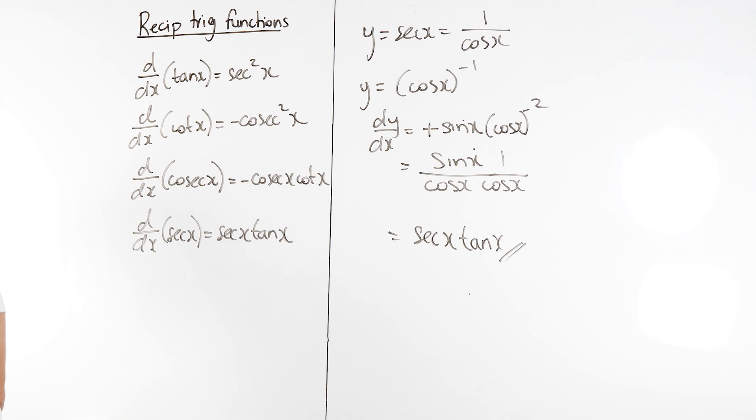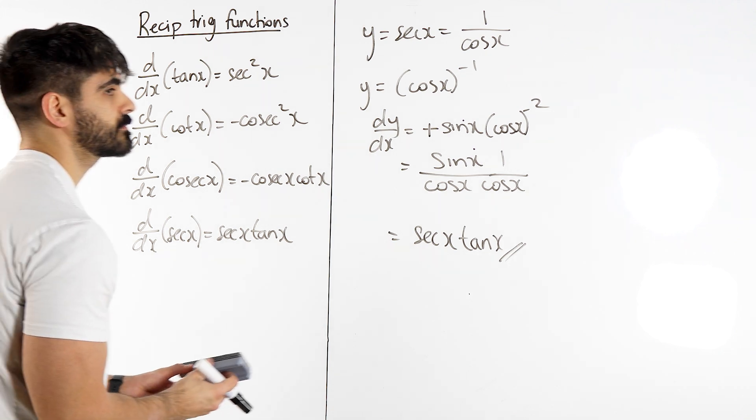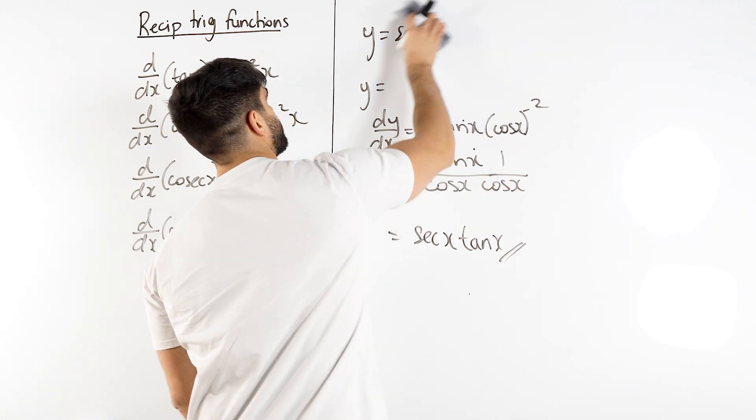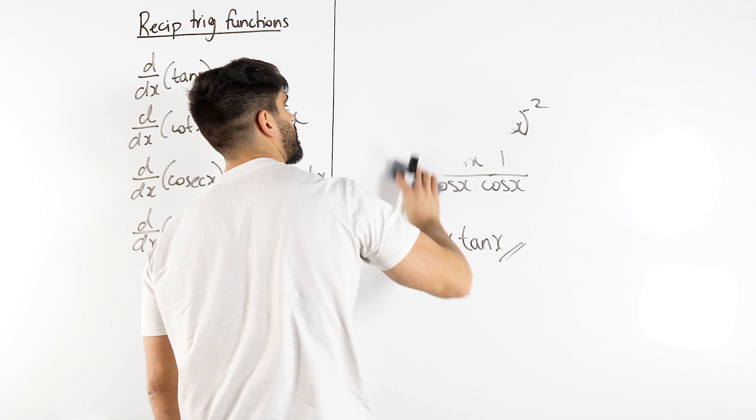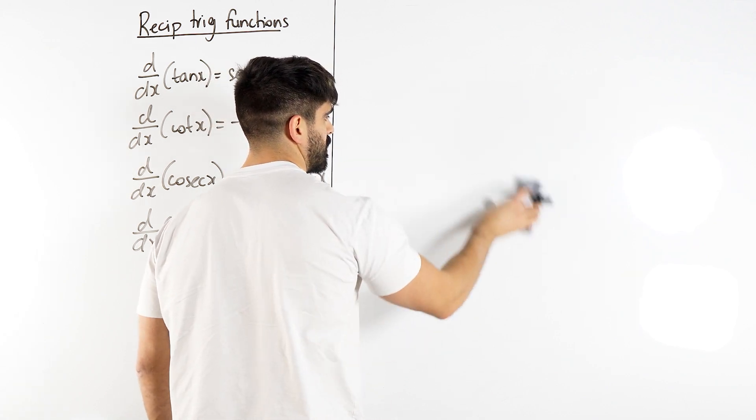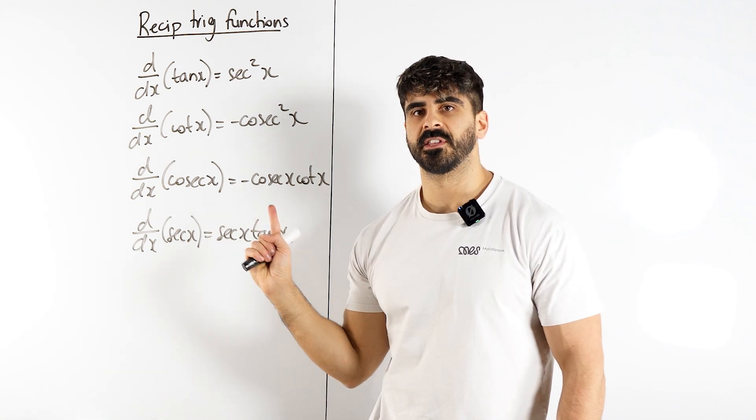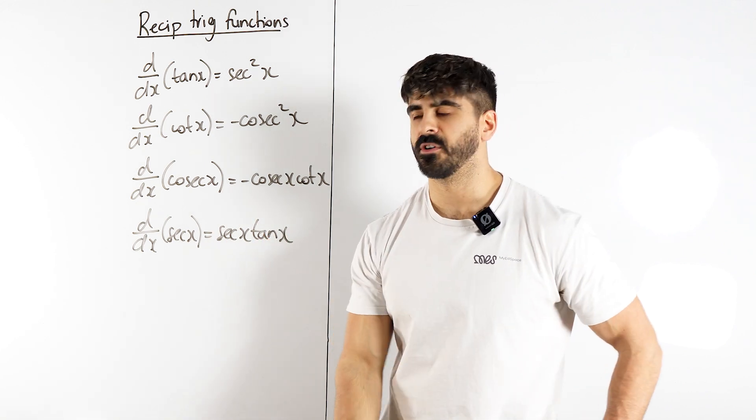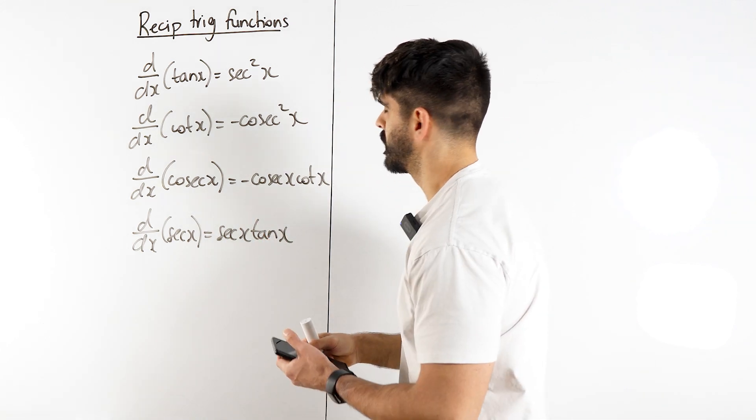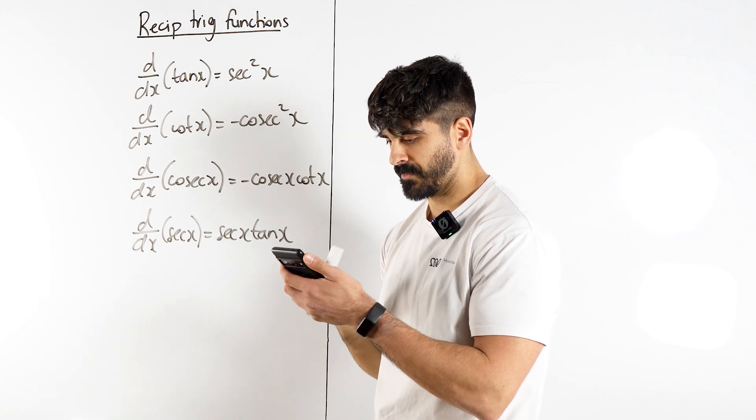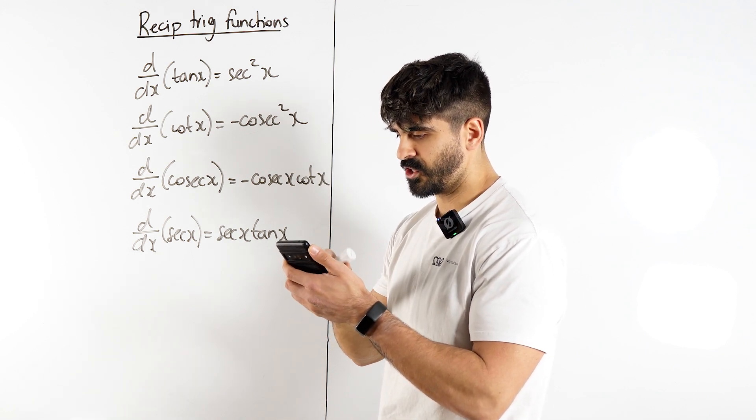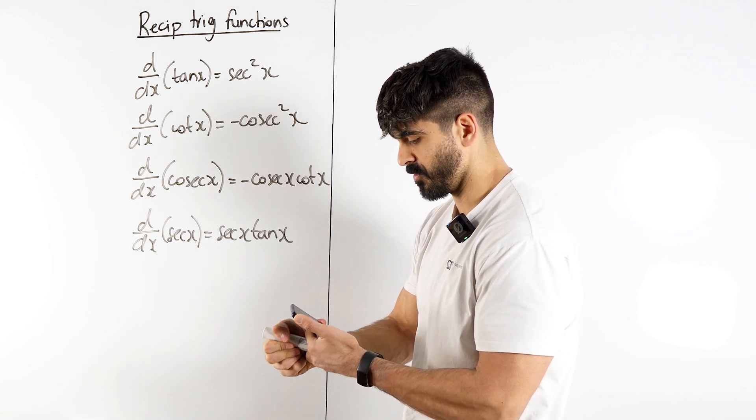Now let's do some examples. I have some prepared because I think they will test out our knowledge generally. The first thing I wanted to differentiate was ln of tan of 4x.